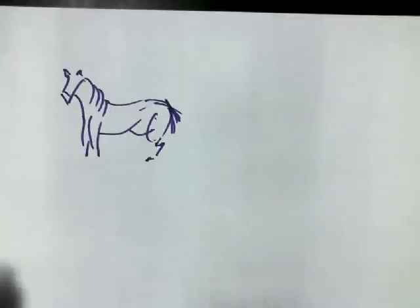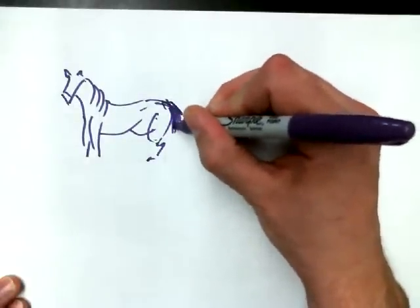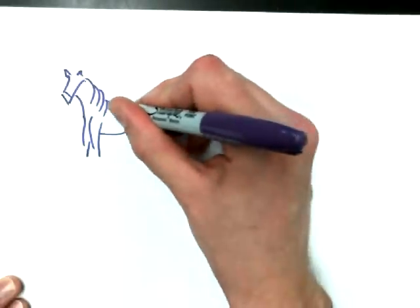Alright, so we've got a horse. The horse looks like cave art. The horse is going to pull a cart.